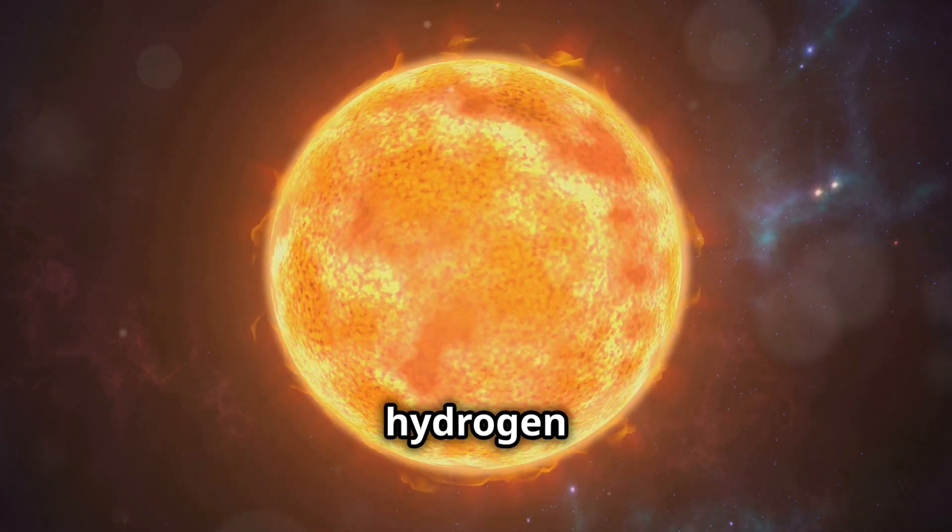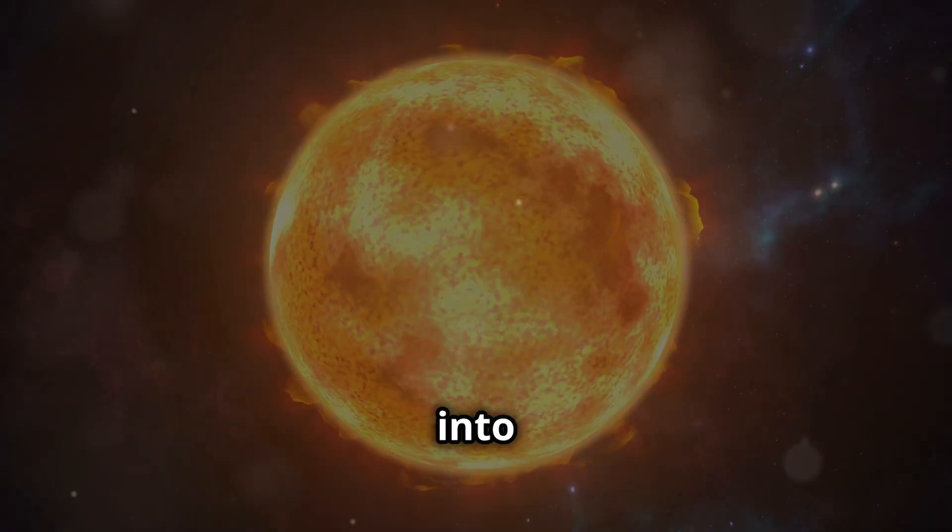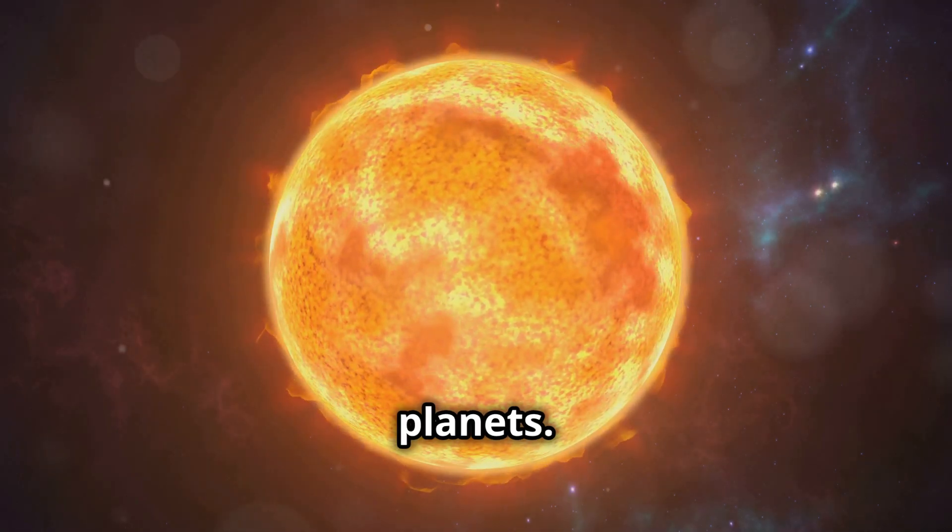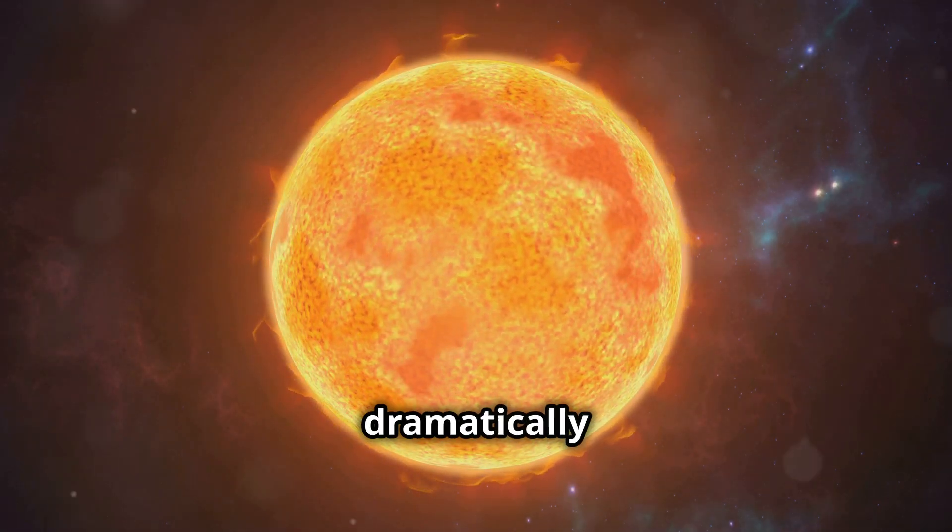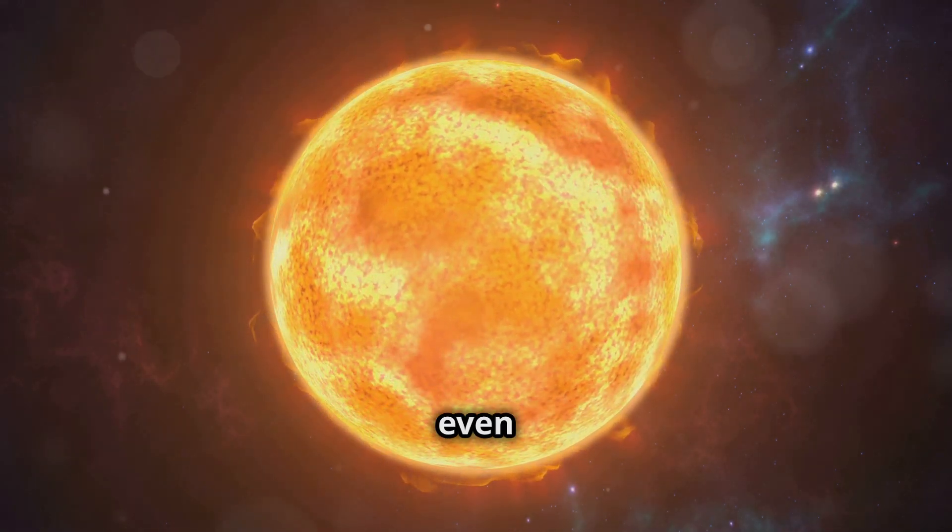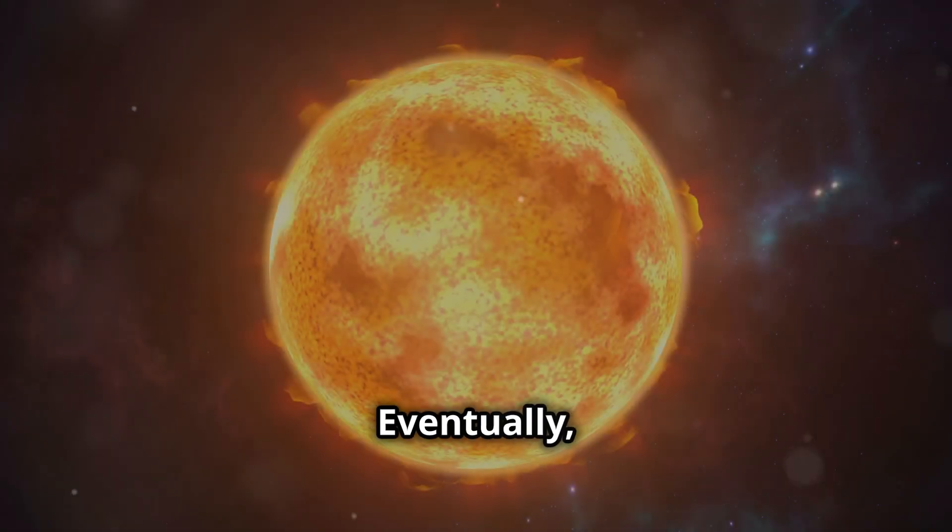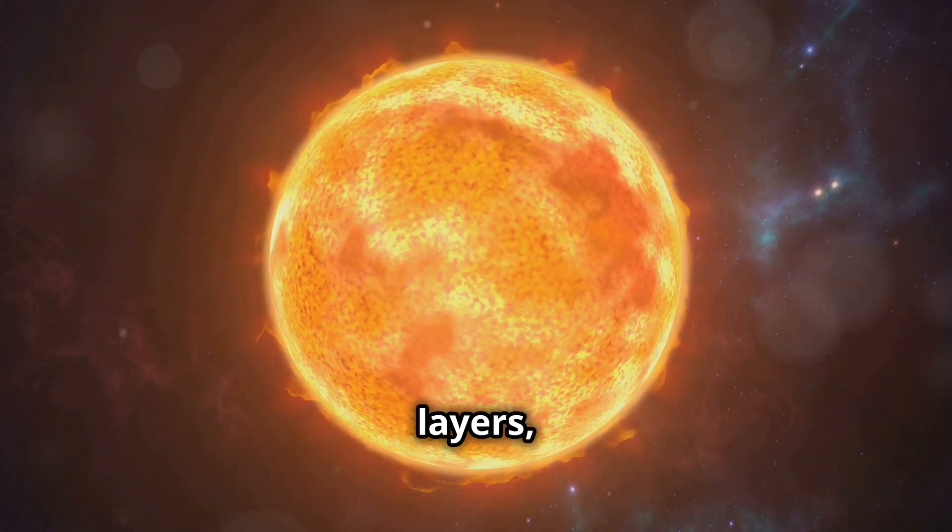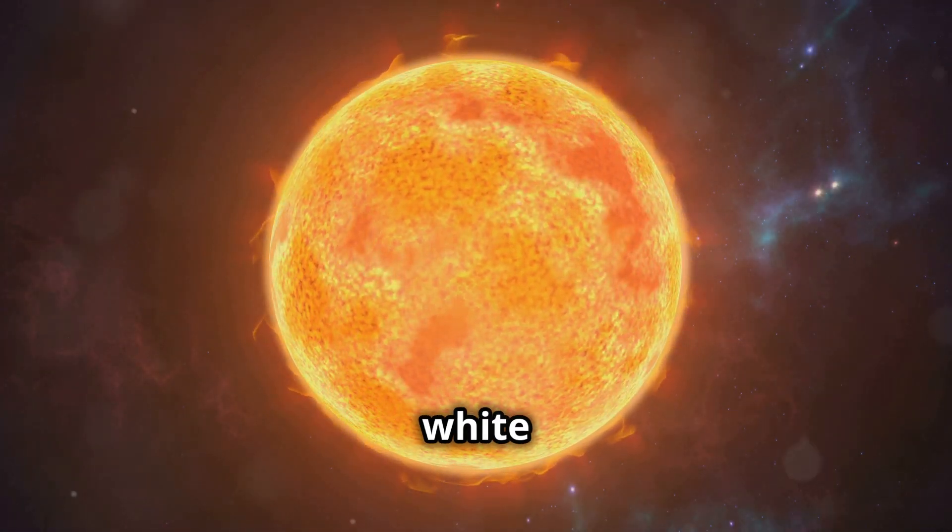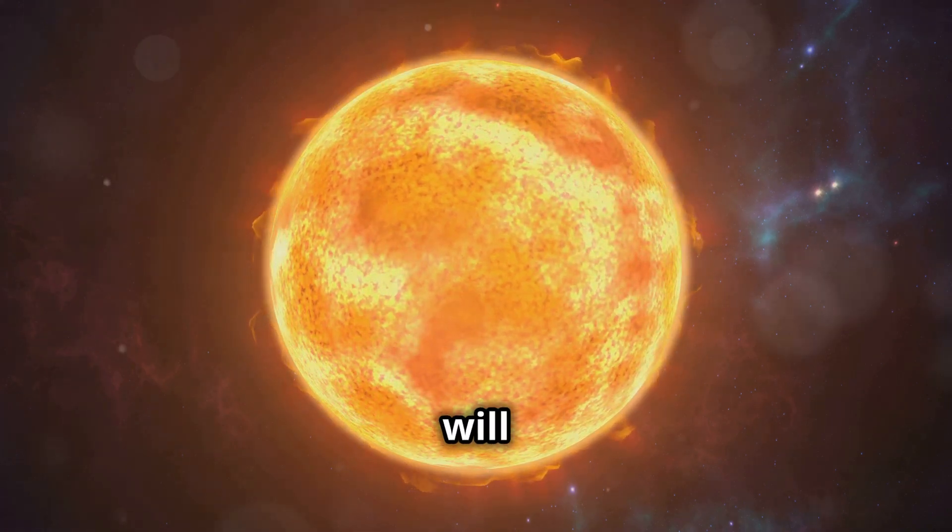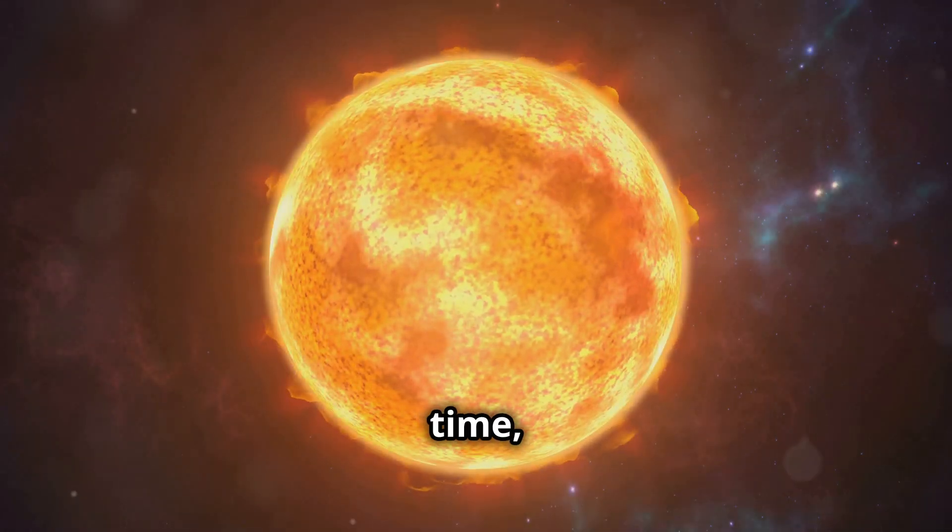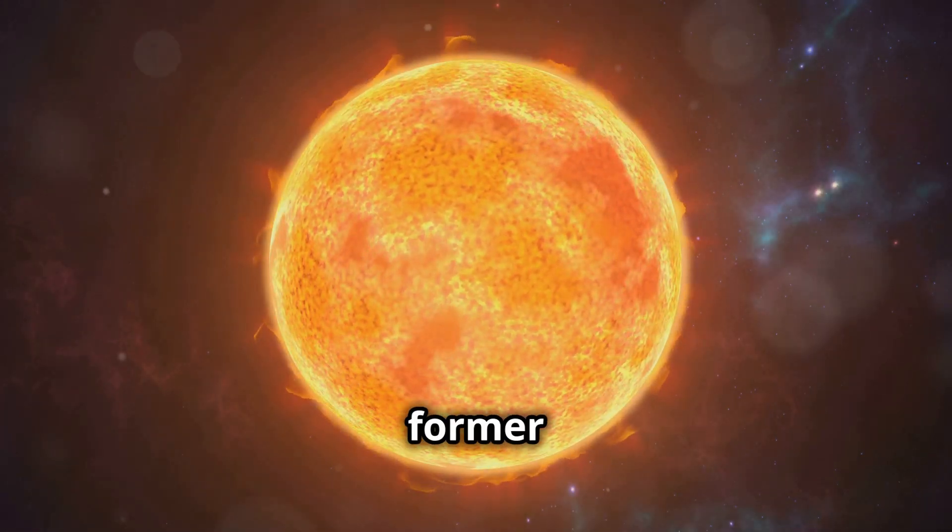As the sun exhausts its hydrogen fuel, it will expand into a red giant, engulfing the inner planets. This expansion will dramatically alter the solar system, potentially even reaching the orbit of Earth. Eventually it will shed its outer layers, leaving behind a dense core known as a white dwarf. This remnant will slowly cool and fade over time.